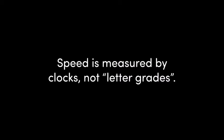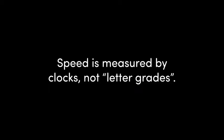Before we get started, I want to explain that we're going to focus on actual load time. Speed is measured by a clock, by a timer — not by a letter grade — because a good letter grade doesn't necessarily equal a fast load time. In this chart we got an A on PageSpeed and an A on YSlow, but we've still got a fully loaded time of 6.8 seconds and a page size of nearly 12 megabytes. What we want to do is make the page load fast for the end user — that's what actually matters.